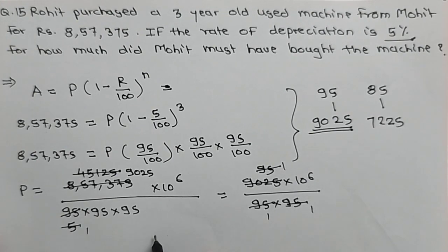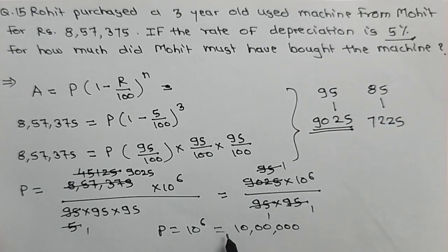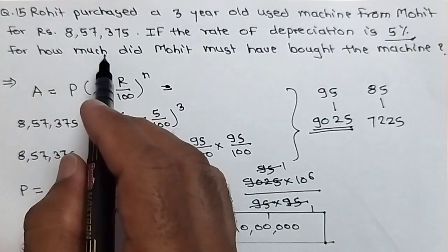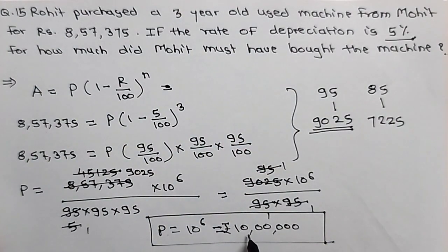So we are getting only 10 raised to 6 here. 10 raised to 6 means, so we got P is equal to 10 raised to 6, that is 10 lakh. So rupees 10 lakh will be the original price of that machine, how much did Mohit must have bought. So he must have bought for rupees 10 lakh. This is all for this video. Thank you.